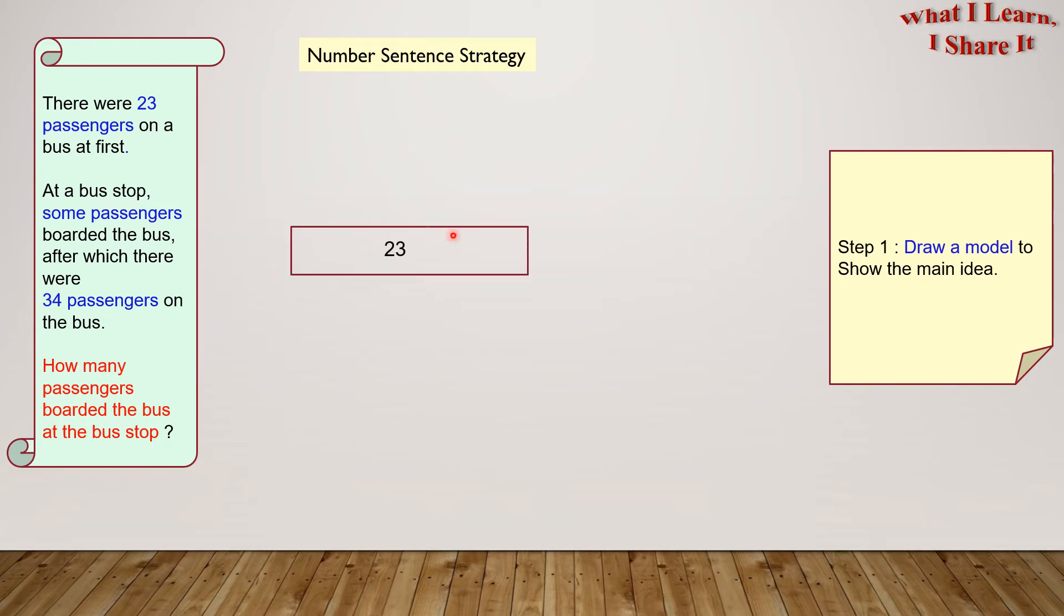So, there were 23 passengers at first, which I represented by this rectangle. At a bus stop, some more passengers got on. And, since we don't know how many, we can write a question mark for it.